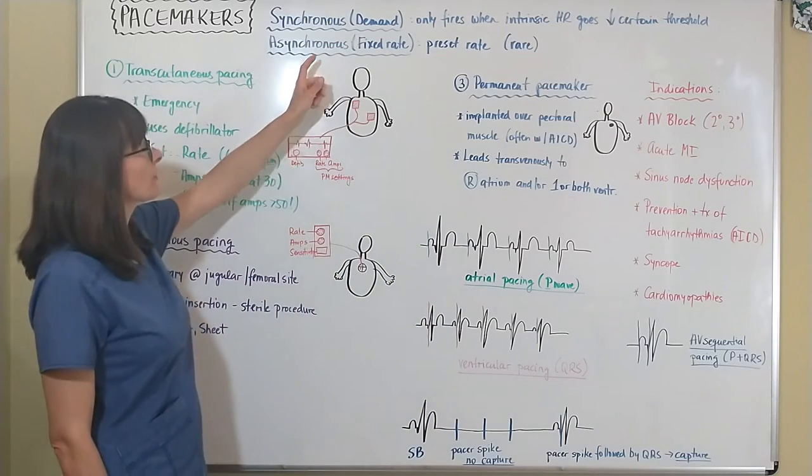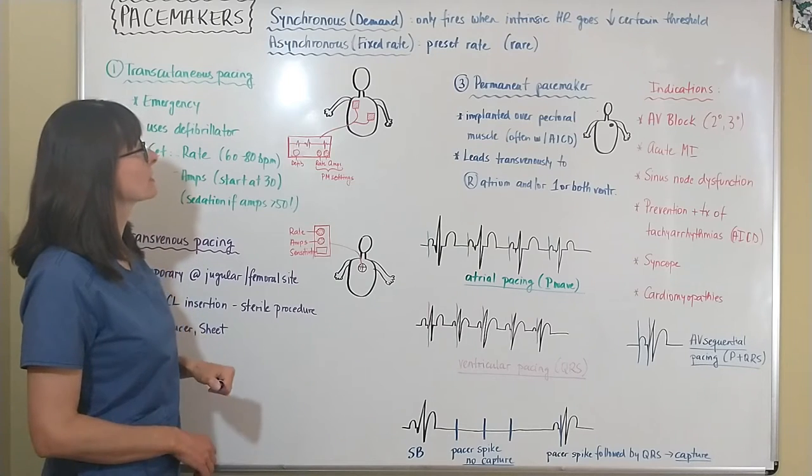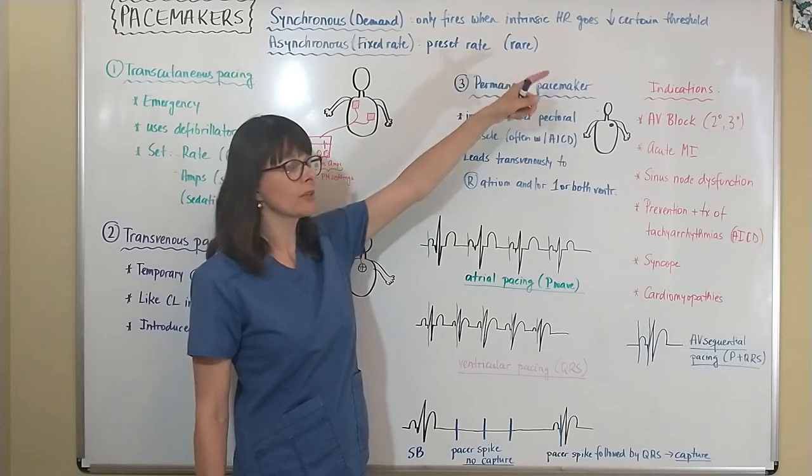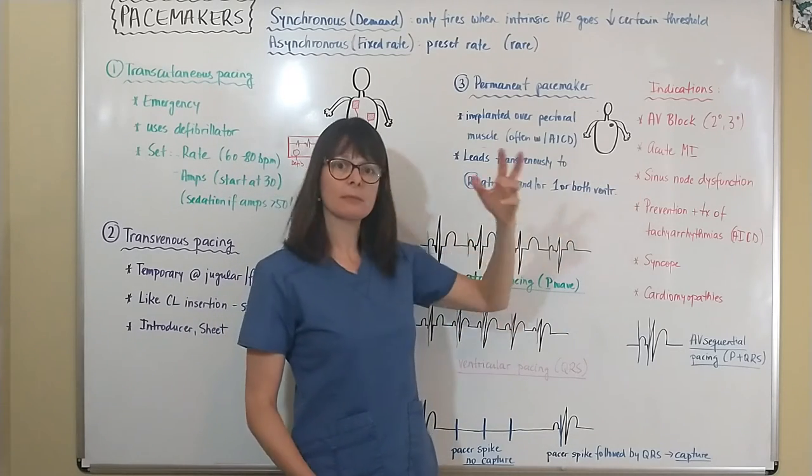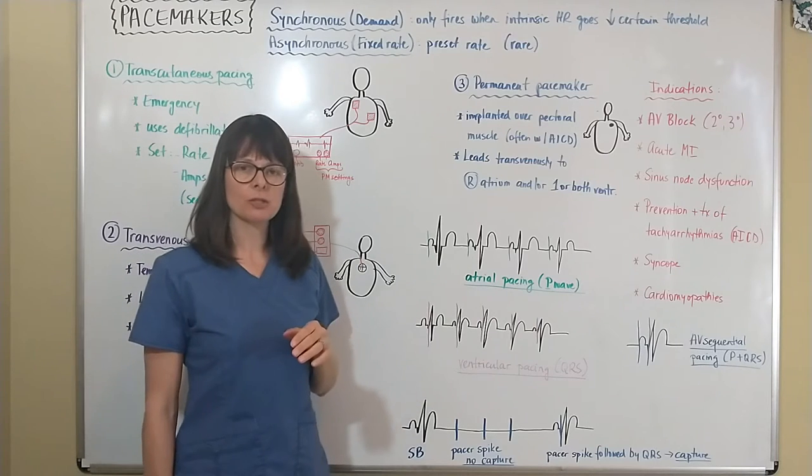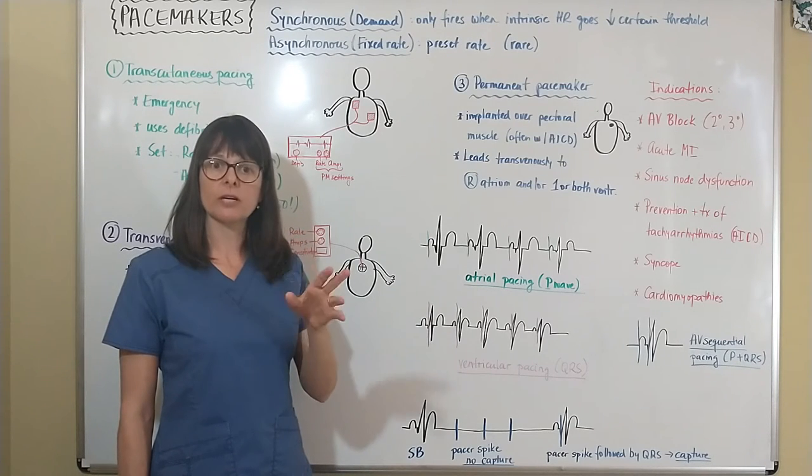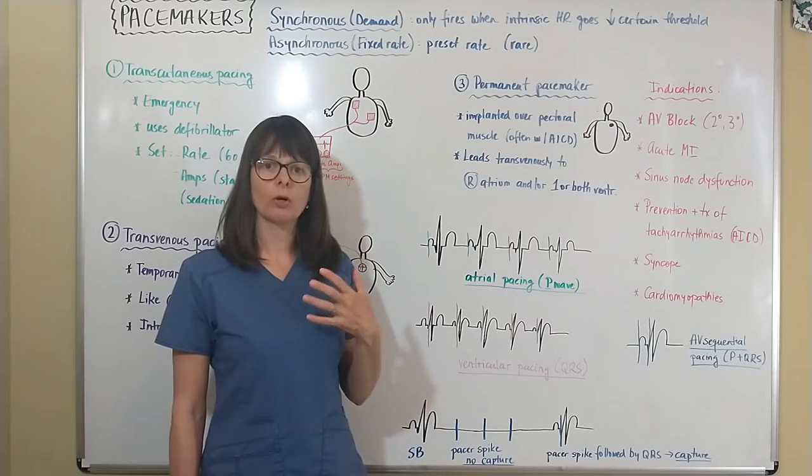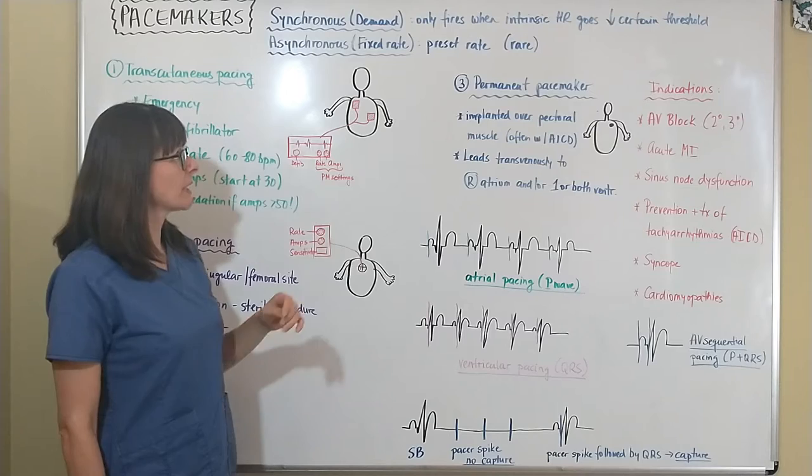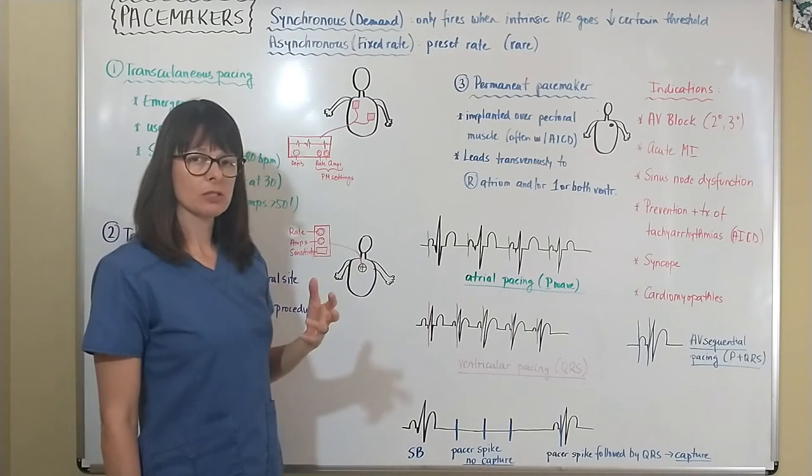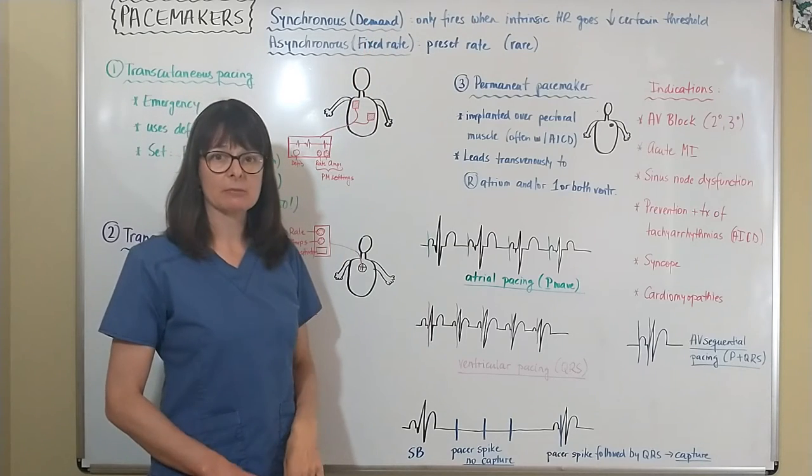And when we talk about permanent pacemakers, there are two different ones which are synchronous or asynchronous. They are sometimes also called demand and fixed rate pacemakers. So a synchronous pacemaker only fires when the intrinsic heart rate goes below a certain threshold. So this patient might be suffering from sinus node dysfunction, but sometimes the sinus node might still be working. So now if the patient's intrinsic heart rate goes below, let's say 60, the pacemaker will kick in. But if it's above 60, then the regular conduction system, the intrinsic conduction system of the patient, will initiate the contraction. And then for asynchronous or fixed rate pacemakers, there's a preset rate. But those are very rare because most likely that conduction system of the patient will still work to a certain degree, and these synchronous and demand pacemakers are more common.